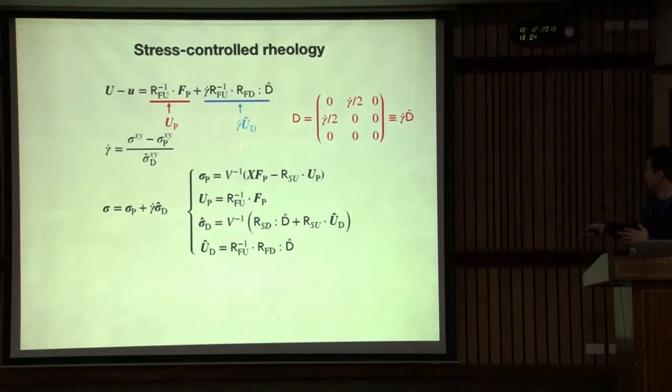Gamma dot is unknown. It's okay. Then this linear algebra, the right side is this d hat which does not include gamma dot. Just gamma dot is here. To find gamma dot, we solve this stress equality. Particle force contribution and deformation contribution, but again gamma dot is factorized. Then xy, we at least input this xy element of stress tensor, so we can determine this gamma dot. This is the stress control algorithm.